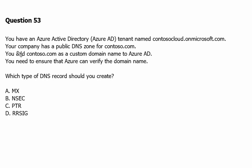Question 53: You have an Azure Active Directory tenant named Contoso Cloud on Microsoft.com. Your company has a public DNS zone for Contoso.com. You add Contoso.com as a custom domain name to Azure Active Directory. You need to ensure that Azure can verify the domain name — which type of DNS record should you create? The reason for domain verification is primarily to prevent misuse or fraudulent use of domains. Azure supports MX records and TXT records for domain verification.